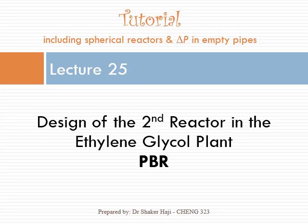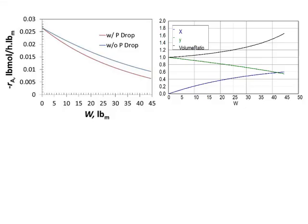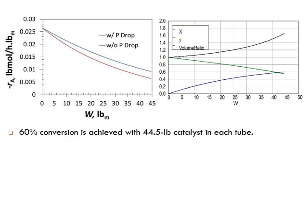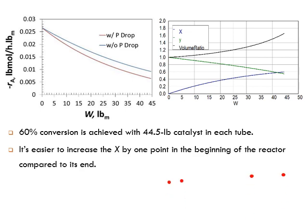Let's continue discussing the problem from the previous lecture. You have plotted both figures and found the solution: 60% conversion is achieved with 44.5 pounds of catalyst in each tube.